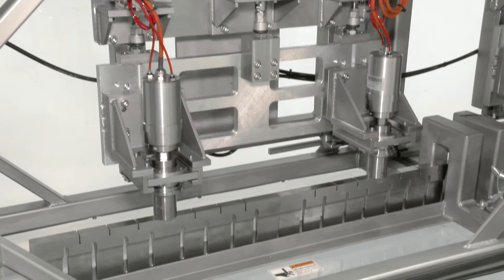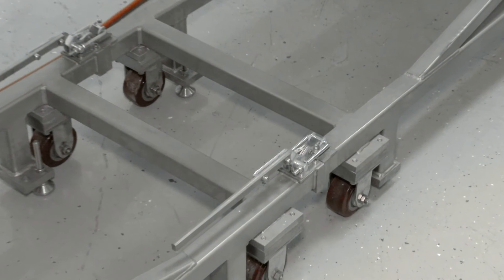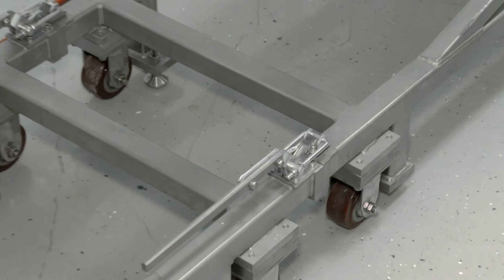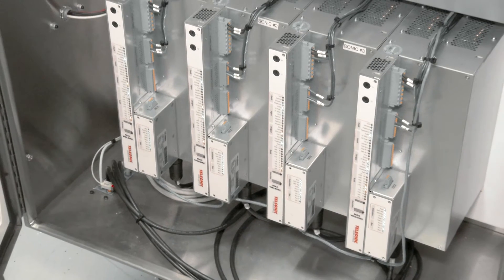Processes 40 rows of pretzel dough on an 80 inch wide conveyor at a rate of 100 cuts per minute. Also utilizes a modular frame design and the new Telsonic 2400 watt mag generators.